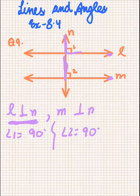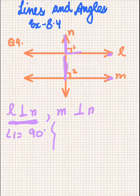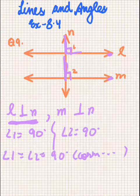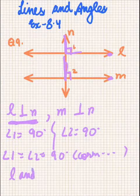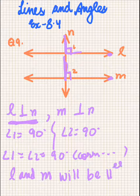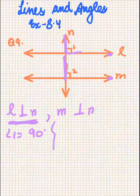We observe that angle 1 and angle 2 are corresponding angles and both are 90 degrees. Since the corresponding angles made by the transversal N on lines L and M are equal, this means L and M are parallel. So we have proved that lines L and M are parallel to each other, which is what we had to show in question number 9.